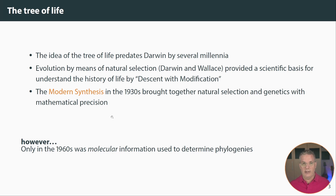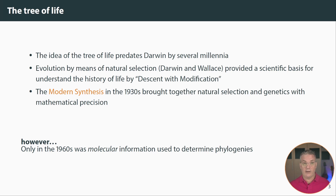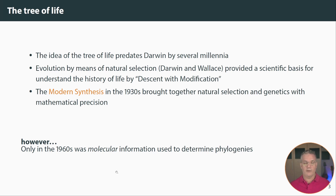That's a little history. Importantly, all of the phylogenies determined up until the 1960s were determined using morphological characteristics or other types of characteristics — not molecular characteristics. So molecular information to determine phylogenies is relatively recent. It's only in the 1960s that it began to be used, and of course much more so as DNA sequencing became available and widespread.